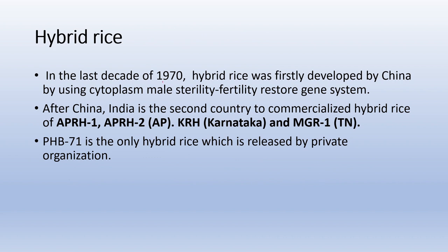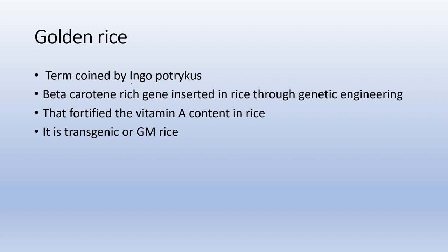Regarding hybrid rice: in the last decade of the 1970s, hybrid rice was first developed by China using cytoplasmic male sterility and fertility restorer gene system. India is the second country to commercialize hybrid rice — examples include APRH1, APRH2, KRH, and MGR1. PHP 71 is the only hybrid rice released by a private organization. Regarding golden rice: it has a beta-carotene-rich gene introduced through genetic engineering. It is a transgenic/genetically modified rice and the term 'golden rice' was given by Ingo Potrykus.